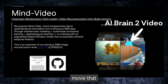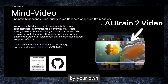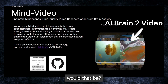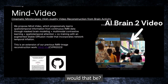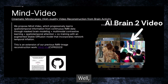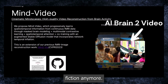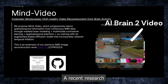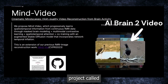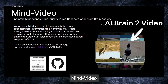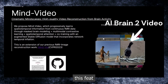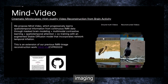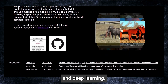Imagine watching a movie that is generated by your own brain activity. How cool would that be? Well, this is not science fiction anymore. A recent research project called Mind Video has achieved this feat using a combination of brain imaging and deep learning.